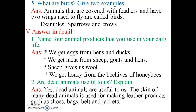Fifth section — name four animal products that you use in your daily life. Answer: we get eggs from hens and ducks; we get meat from sheep, goats, and hens; sheep give us wool, which is used for making sweaters and other warm clothing; and we get honey from the beehives of honeybees.